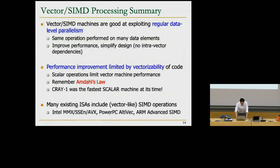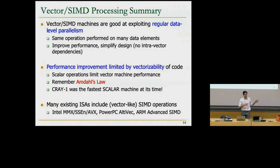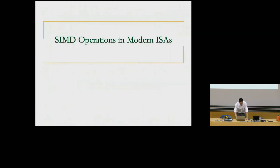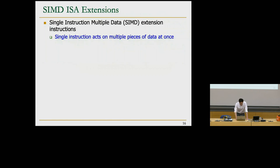We mentioned examples of vector machines like the Cray-1. Today, SIMD operations are found as multimedia extensions in current CPUs — for example, MMX instructions in Intel x86 processors. Next we'll discuss SIMD operations in modern ISAs, specifically MMX.